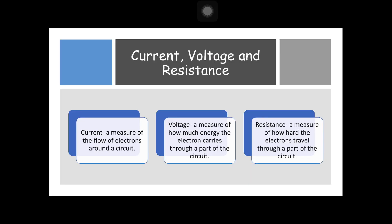Next, current, voltage, and resistance. Current: a measure of the flow of electrons around the circuit. Voltage: a measure of how much energy the electrons carry through a part of the circuit. And resistance: a measure of how hard it is for electrons to travel through a part of the circuit.